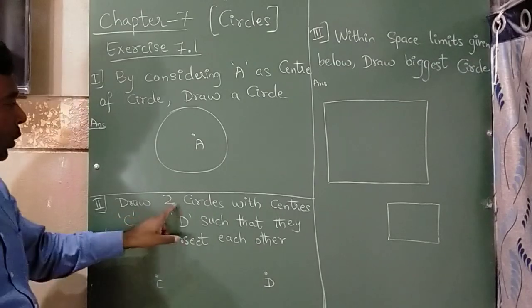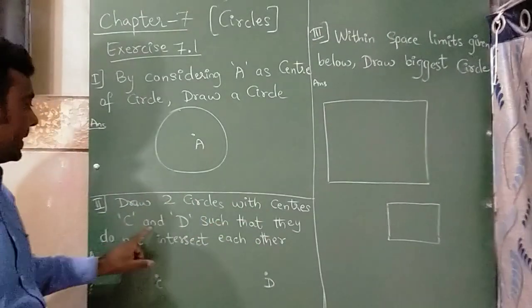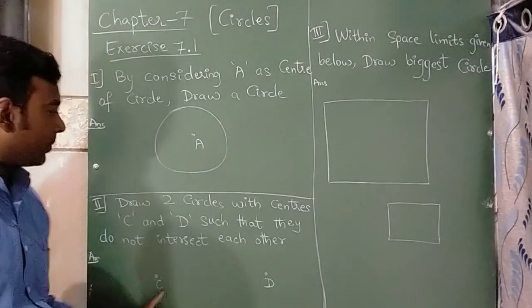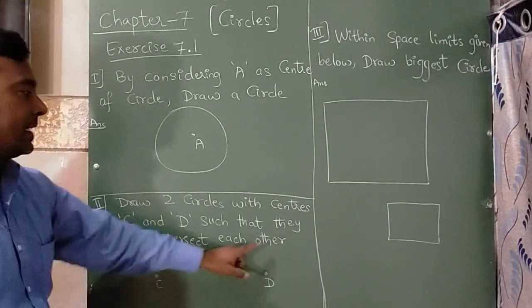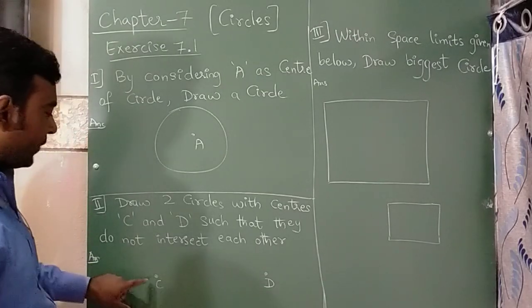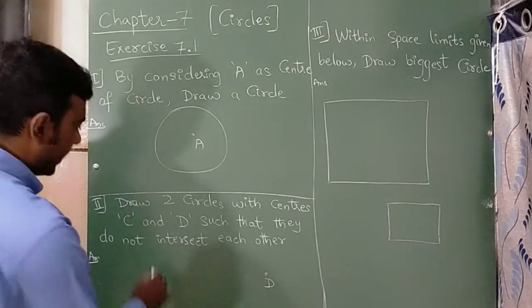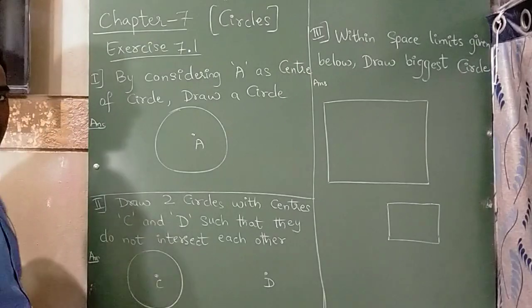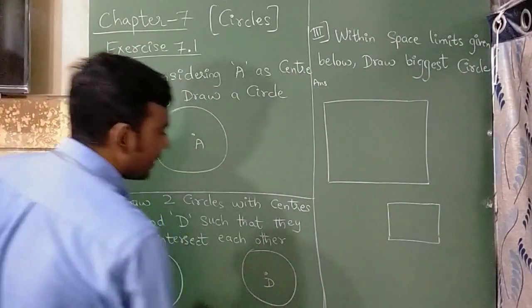Second question is, draw two circles with centers C and D such that they do not intersect each other. They do not intersect each other means they should not touch each other. So if I consider this, from here draw a circle. From here draw a circle.